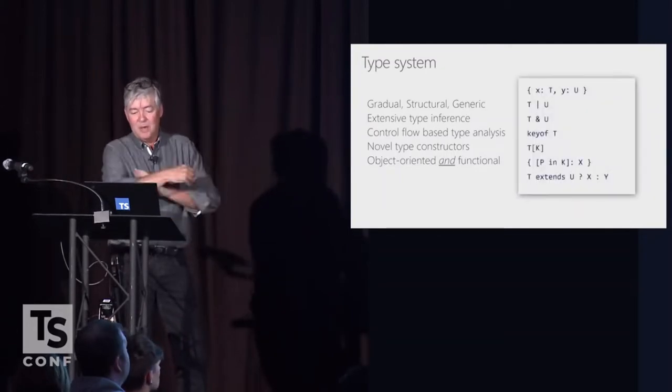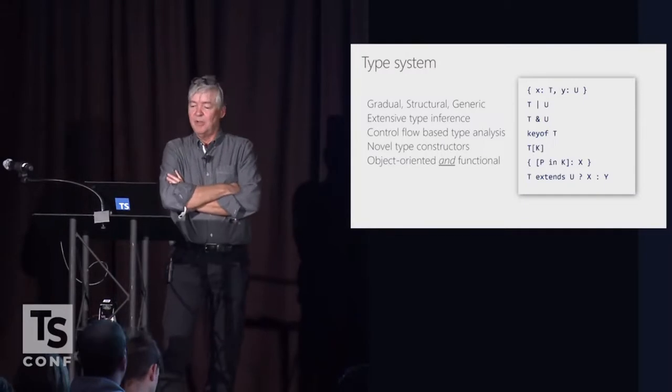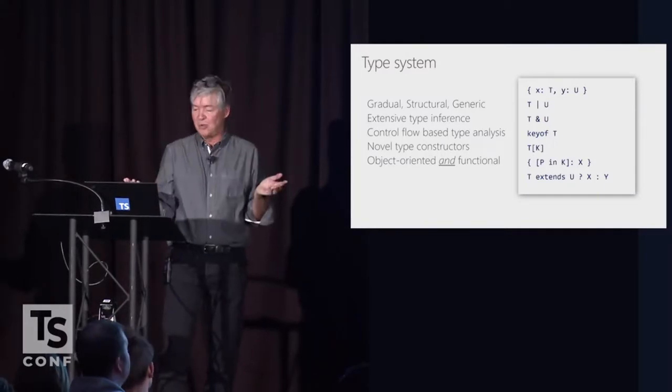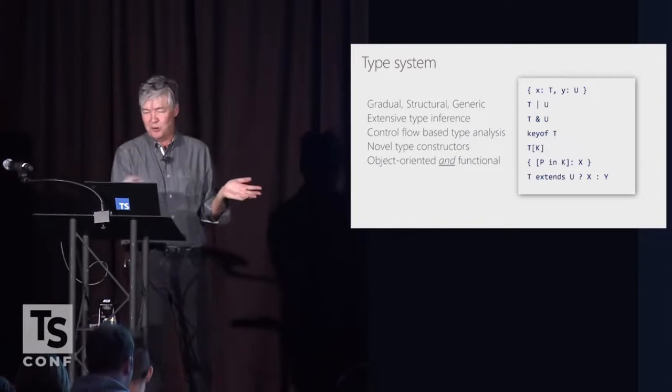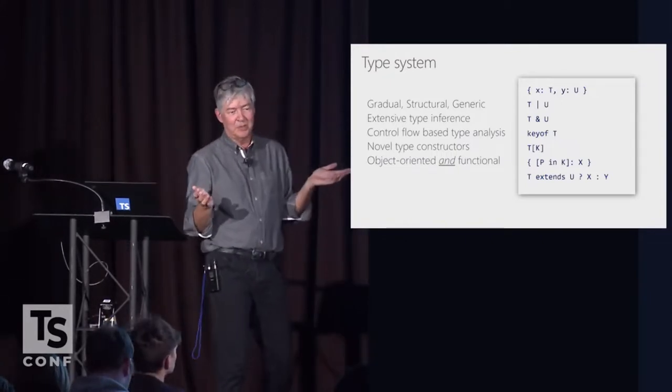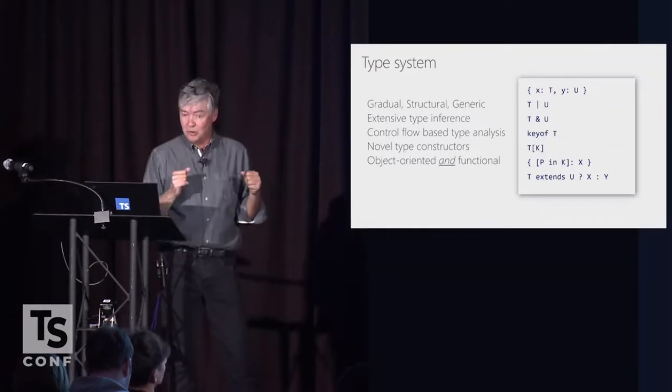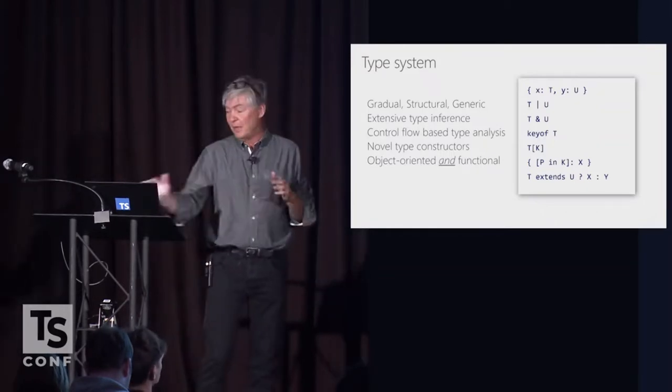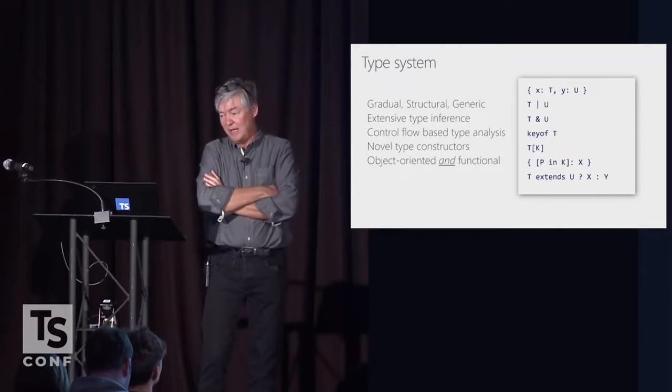Now, speaking about the novel type constructors, originally TypeScript was just sort of a bunch of primitive types, and then the first one here on the slide, you could declare object types and function types, and that was sort of it. And then we've gradually grown downwards. Unit types, union types got added, and then intersection types.